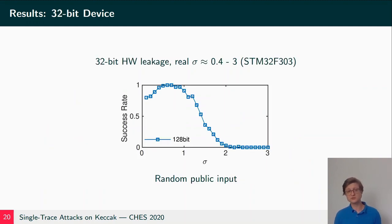And for 32-bit Hamming weight leakage, the real noise parameter varies a lot, so there we would need to look into the more concrete applications. In the 128-bit scenario with random public input, the attack also works. With all-zero input, we didn't get it to work and also not with 256-bit keys.